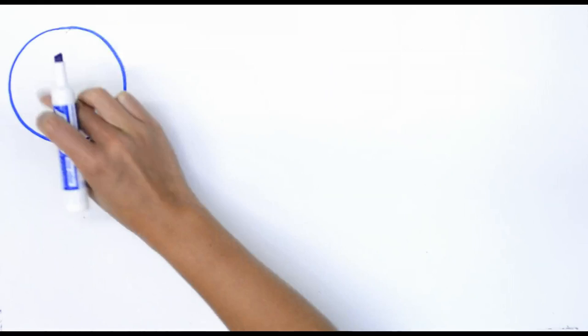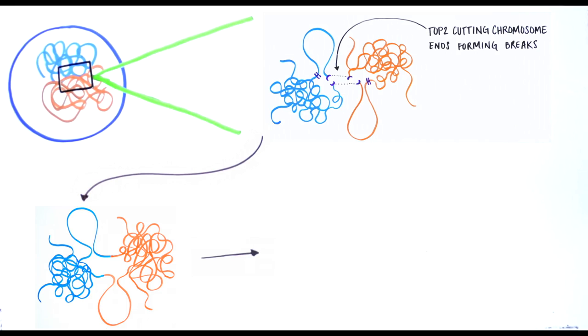Therefore, in trying to solve the immensely difficult problem of chromosome folding within the confines of the nucleus, TOPO2 could potentially create a worse problem.